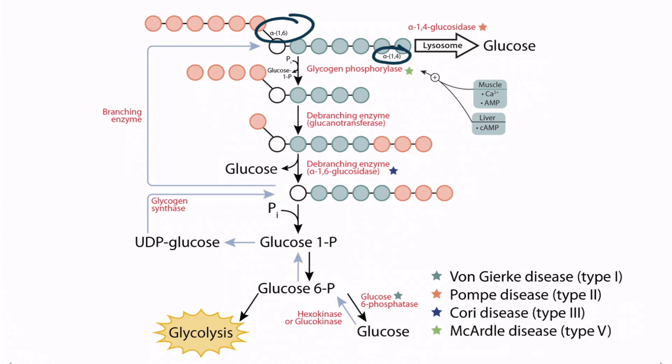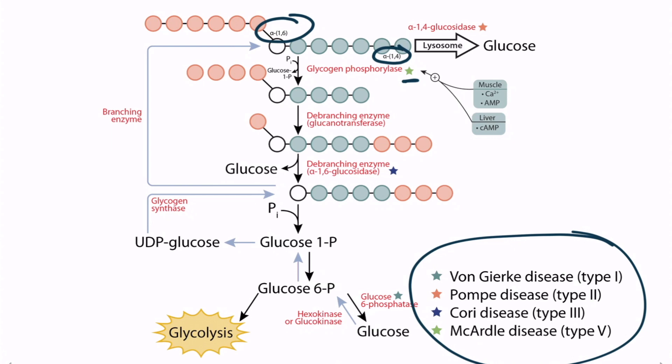Notice that some of these enzymes have a star next to them. Deficiencies of these enzymes with stars next to them result in glycogen storage diseases, which can be found at the bottom of the image right here. We'll talk more about glycogen storage diseases in a second, but this figure provides a good overview.